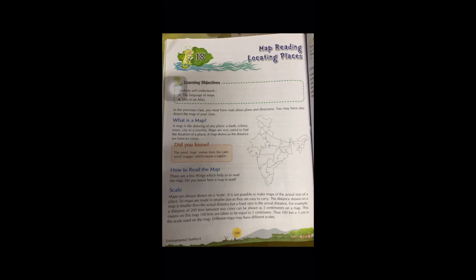What is a map? A map is the drawing of any place—that can be a bank, colony, town, city, or a country. Maps are very useful to find the location of a place. A map shows the distance we have to cover.